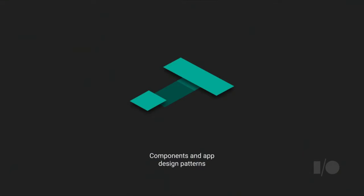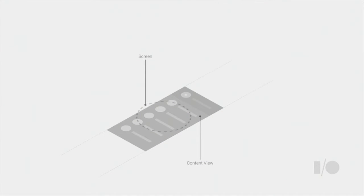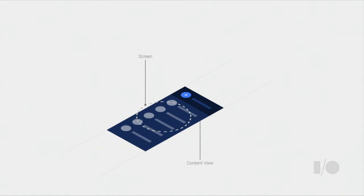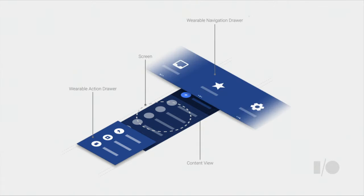We've talked about vertical layouts and darker colors — two of the key areas of material design for wearables. Now let's talk about the last one: UI components and patterns. We'll walk you through the basic anatomy of a material design app for Wear 2.0, which uses a vertical container with a dark color palette and two key components that Paul will show you how to build: the wearable action drawer and the wearable navigation drawer.